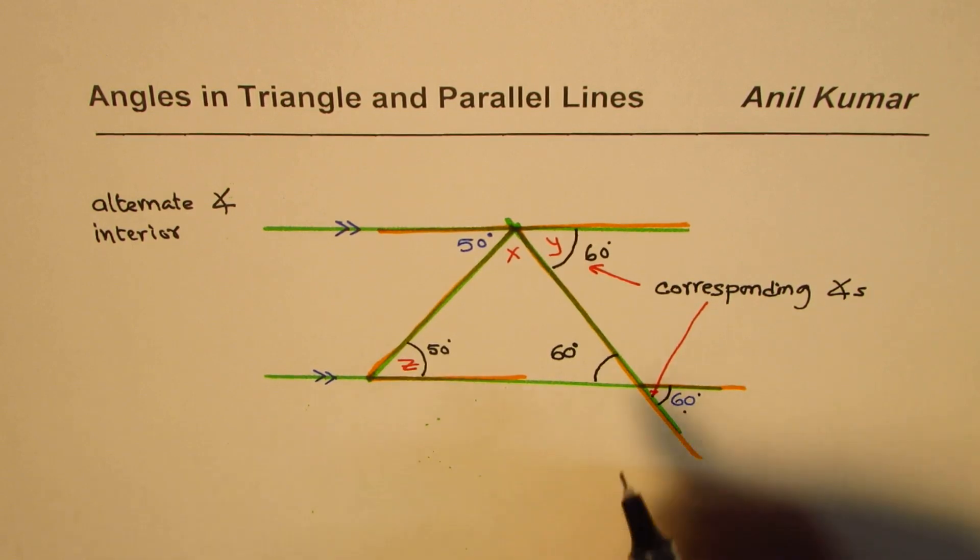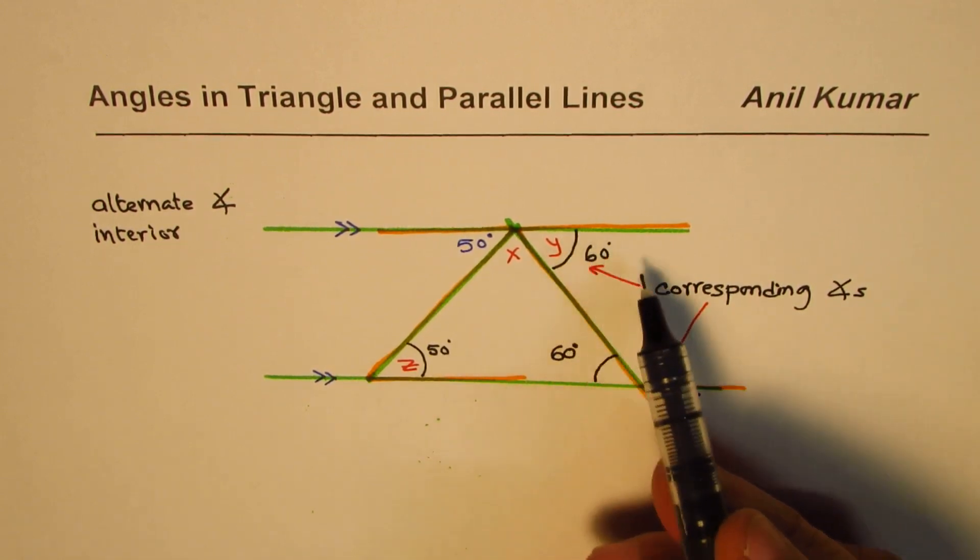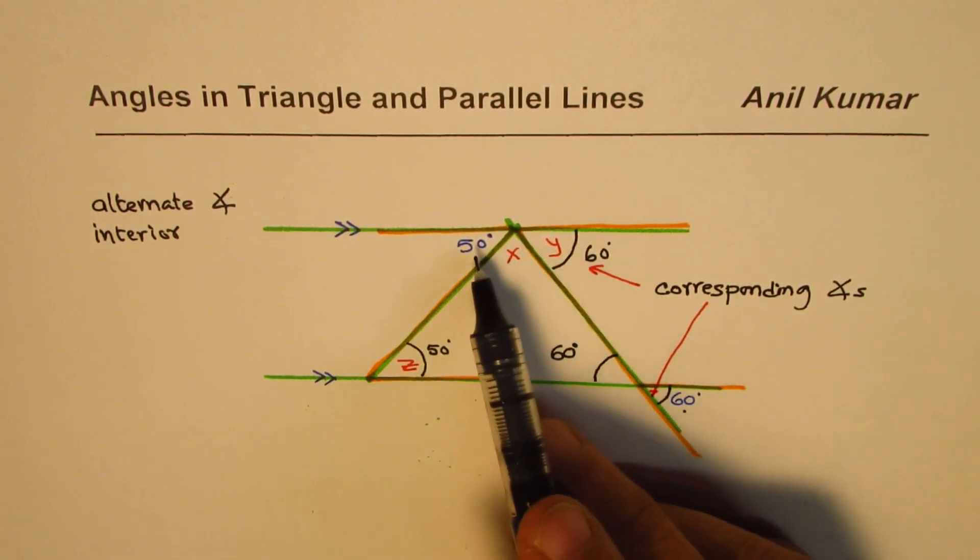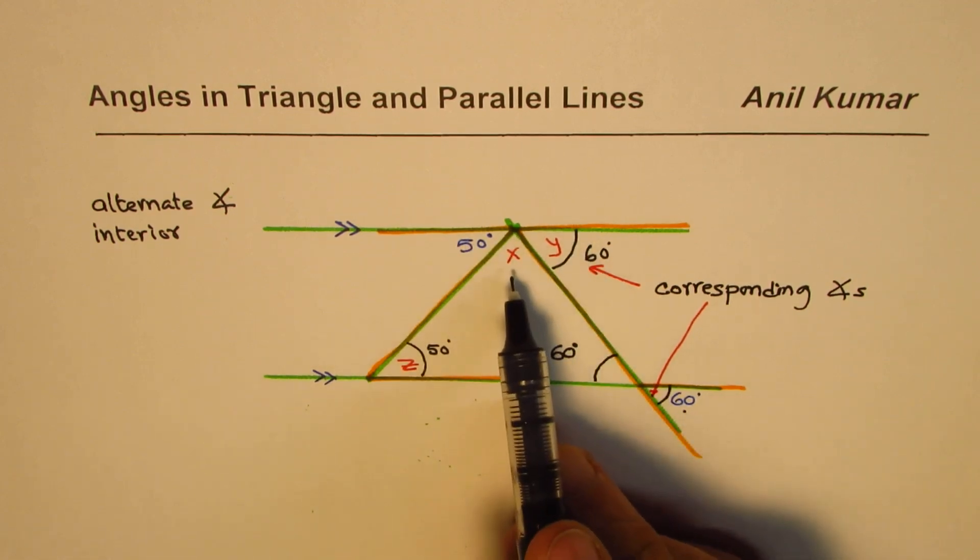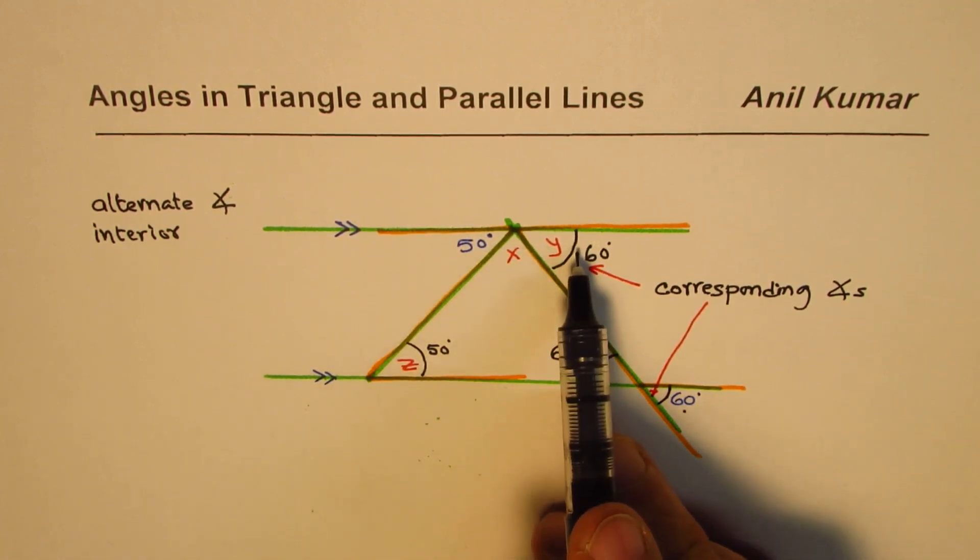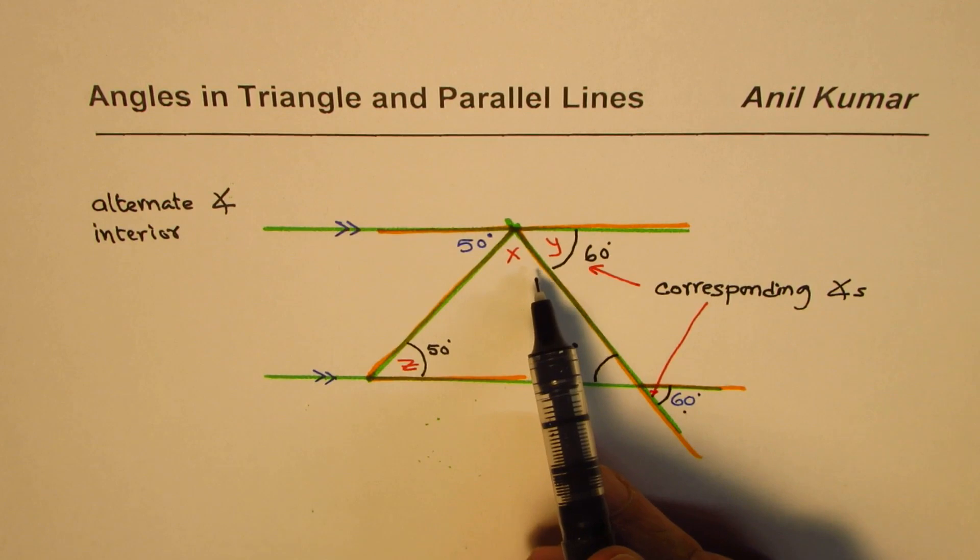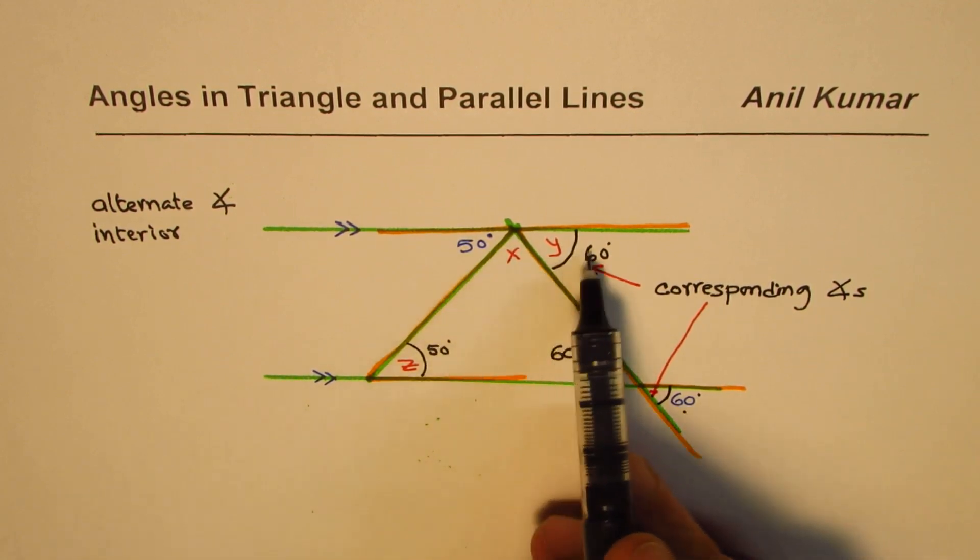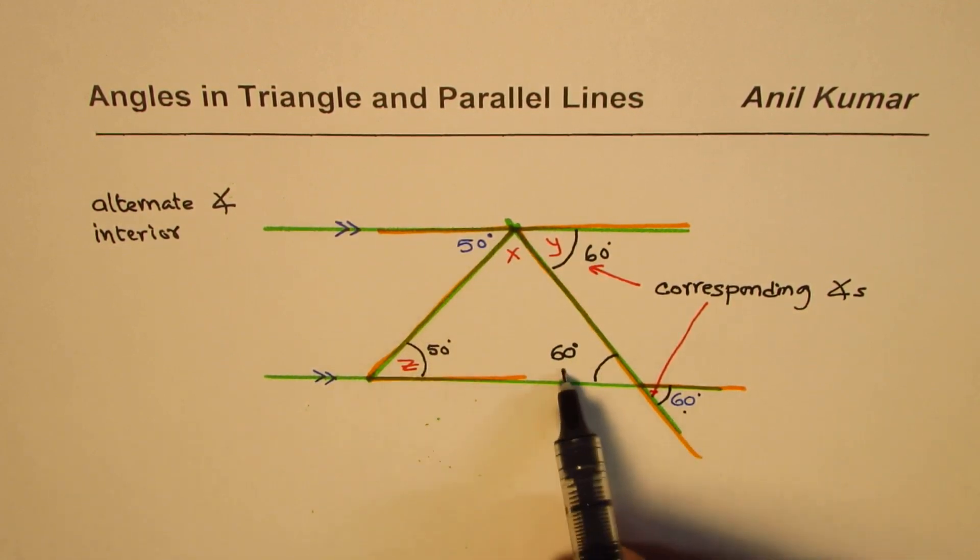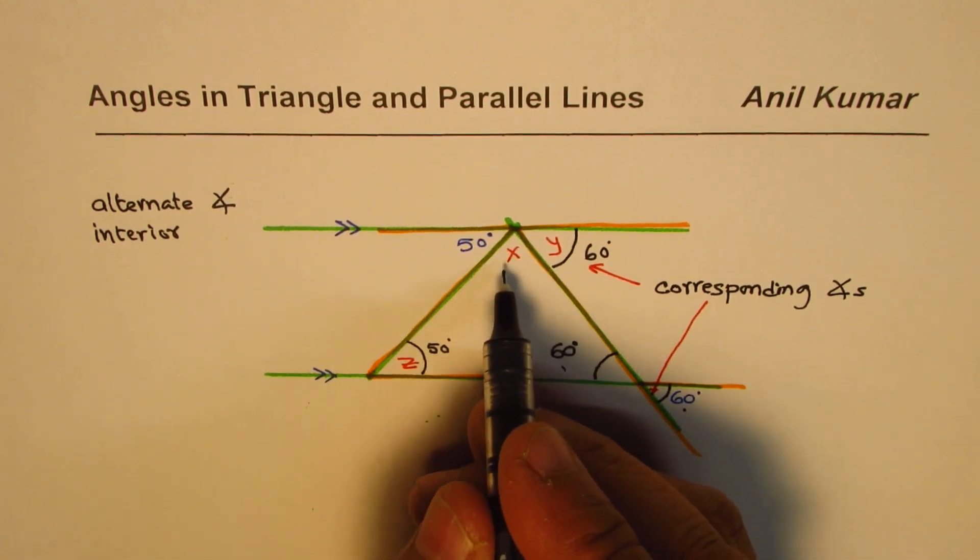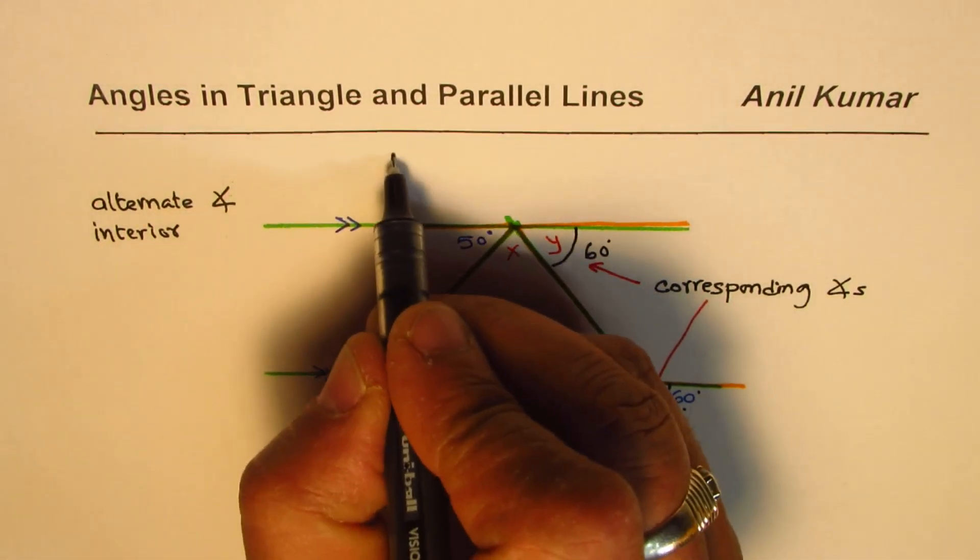Now once you get 60 degrees and 50 degrees on a straight line, x is 180 minus these two. So you could find x either from this calculation or from the triangle calculation, correct? So the value of x should be, let's take linear pairs.